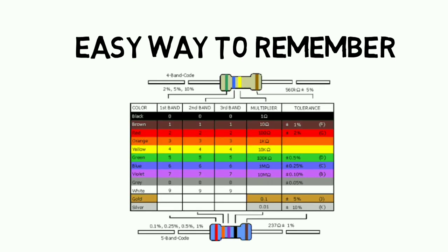We use a number sequence from 0 to 9 corresponding to the colors in order: Black (0), Brown (1), Red (2), Orange (3), Yellow (4), Green (5), Blue (6), Violet (7), Grey (8), White (9), Gold, and Silver.